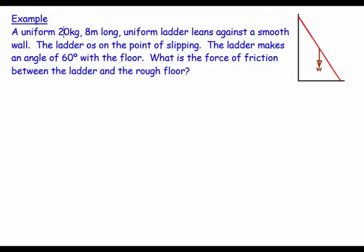Welcome. This question says a uniform 20 kilogram, 8 meter long ladder leans against a smooth wall. The ladder is on the point of slipping. The ladder makes an angle of 60 degrees with the floor. What is the force of friction between the ladder and the rough floor?